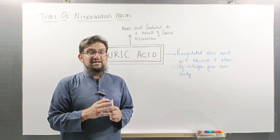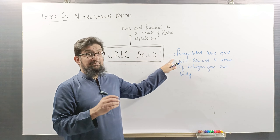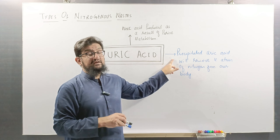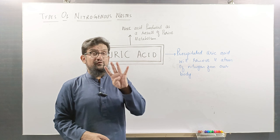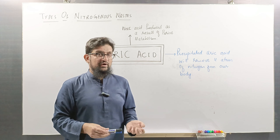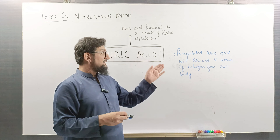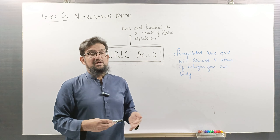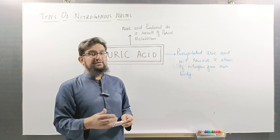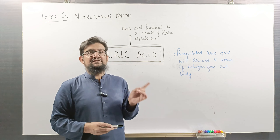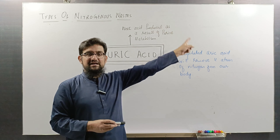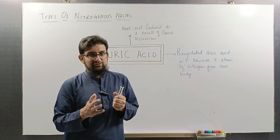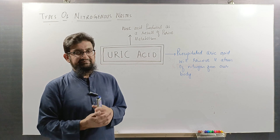When uric acid is present in precipitated form, you must remember it facilitates the removal of four nitrogen items from our body. Nitrogen waste products are produced by the metabolism of proteins and nucleic acids.